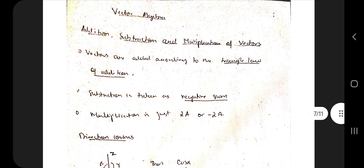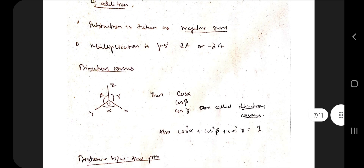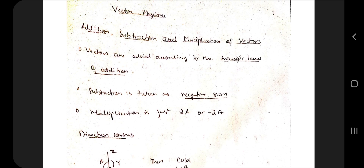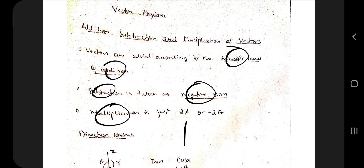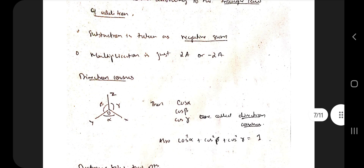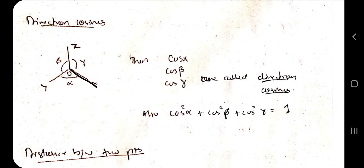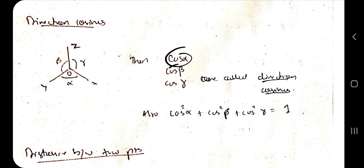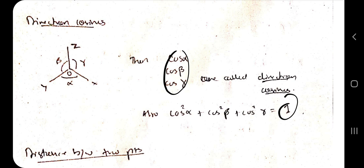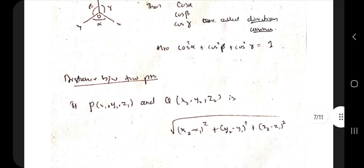Coming to vector algebra, the four topics are addition, subtraction, multiplication, dot product, and vector (cross) product. For addition, use the triangle law; for subtraction, take the negative sum; multiplication is simply multiplying a constant with the vector. There are three axes x, y, and z with angles α, β, γ. cos α, cos β, cos γ are the direction cosines; squaring and adding them gives 1.